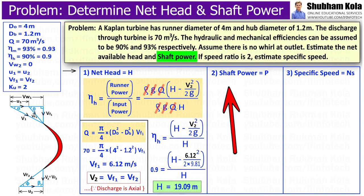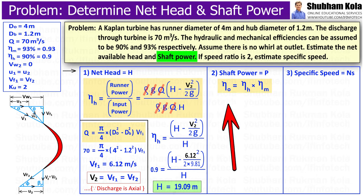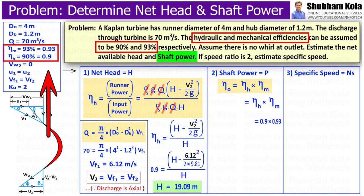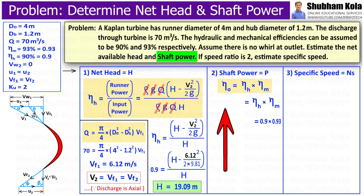Next, we want to calculate shaft power, which can be calculated from the overall efficiency formula. Overall efficiency is the product of hydraulic and mechanical efficiency — hydraulic efficiency is 0.9 and mechanical efficiency is 0.93. Overall efficiency is also given by shaft power divided by input power.